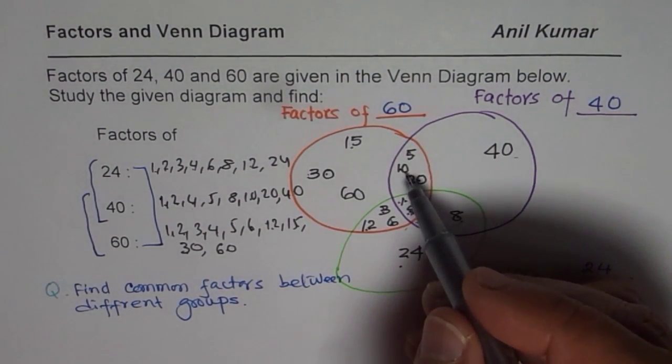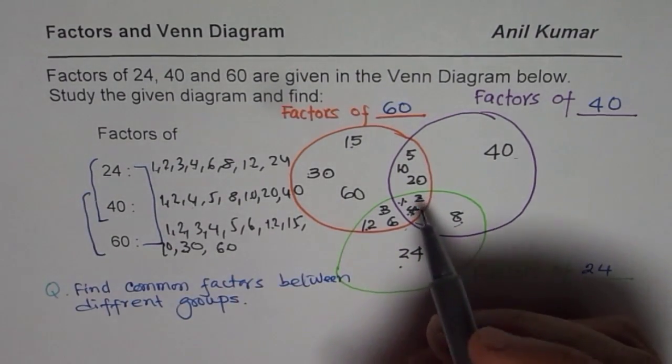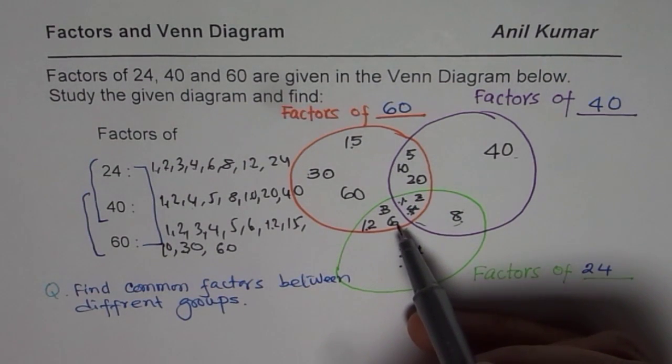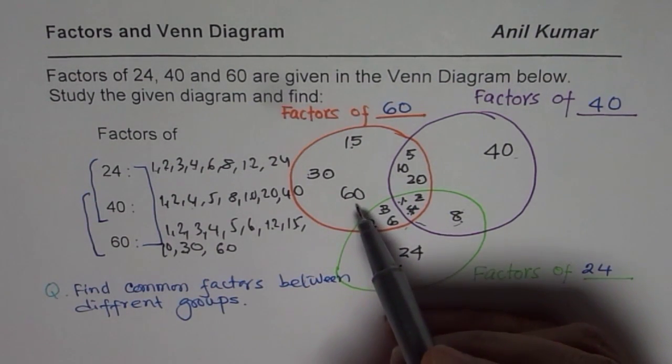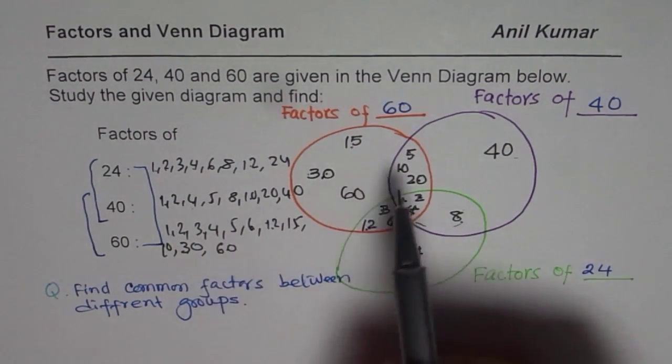We missed 1. Definitely, we missed this 10. Let me add 10 here. And, other one is what? We have got 1, 2, 3, 4. Then, we have 6, 12, 60, 30, and 15.